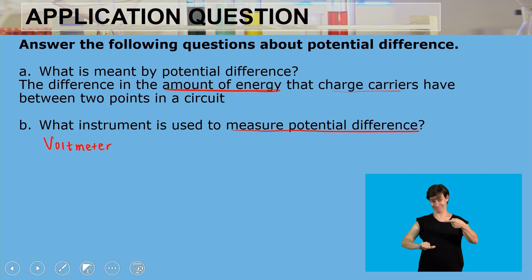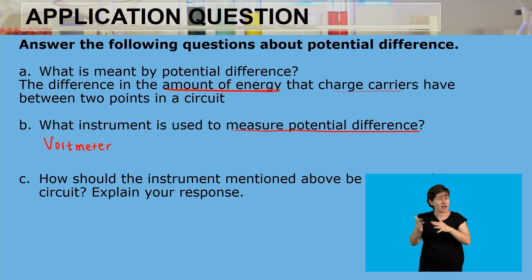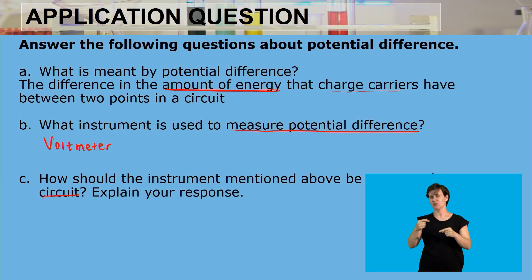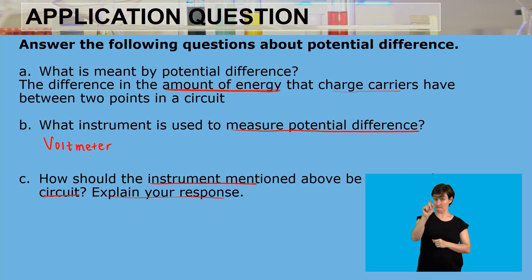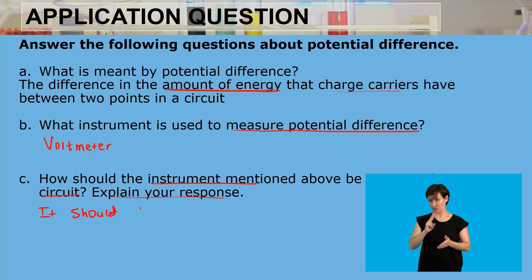The third question asks: how should the voltmeter be connected in a circuit — specifically the parallel circuit — and we need to explain our response. The voltmeter should be connected in parallel.